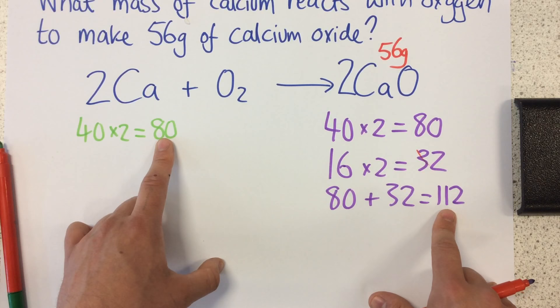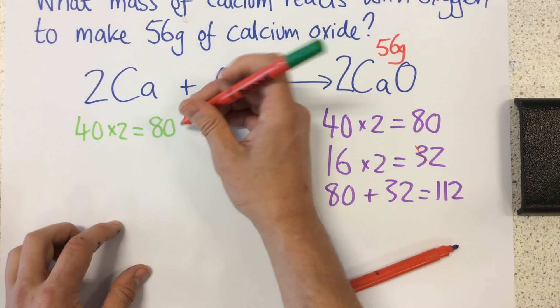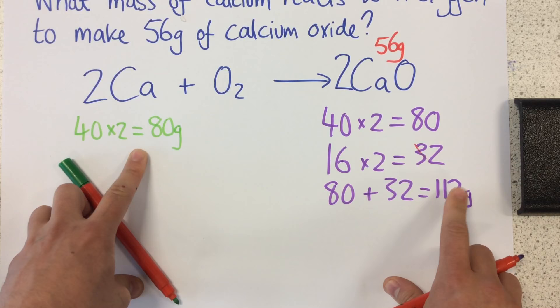So if I had 80 grams of this, I would make 112 grams of this. However, I'm not interested in making 112, I'm interested in making 56.